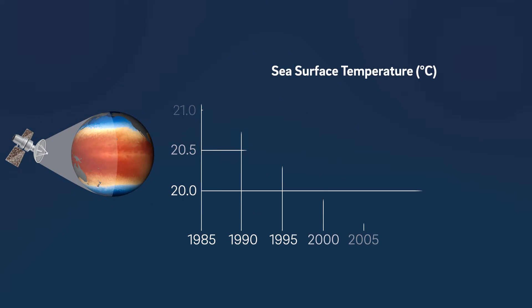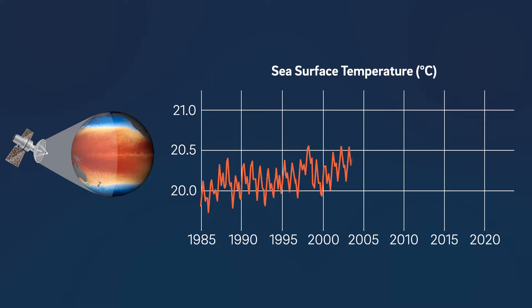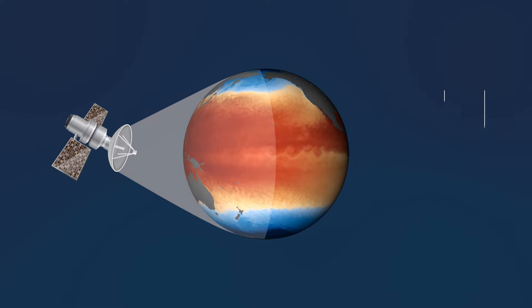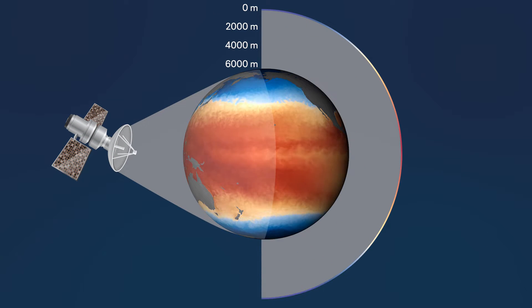From satellites, we've seen a steady increase in average sea surface temperature, rising over 1 degree Celsius since readings began in the early 1980s. But satellites only monitor the top millimeter of the ocean's surface, a tiny fraction of the ocean's volume.